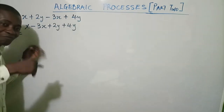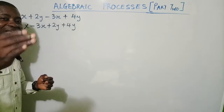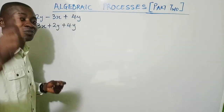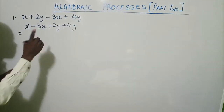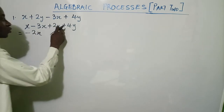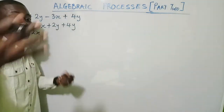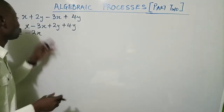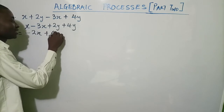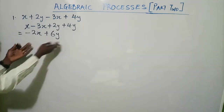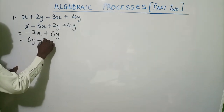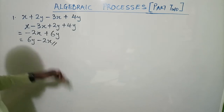Minus means you are owing, and plus means what you have. So you have one x and you owe 3x, so you pay your one x and still owe 2x — that gives minus 2x. For the y terms: you have 2y and receive an extra 4y, so altogether you have 6y. The answer is 6y minus 2x — that is what it means to simplify.